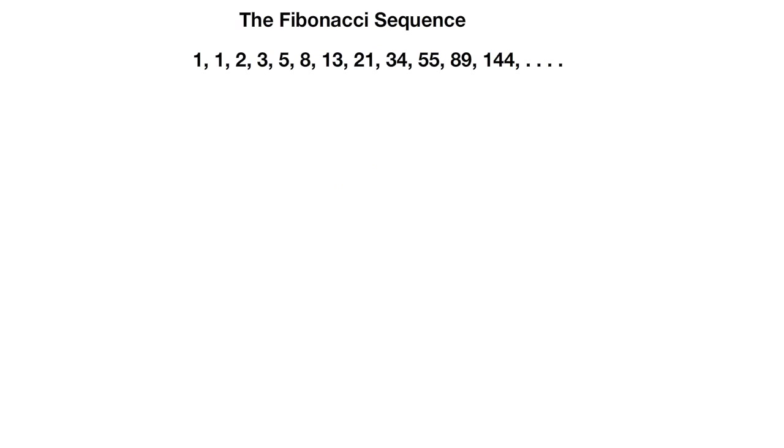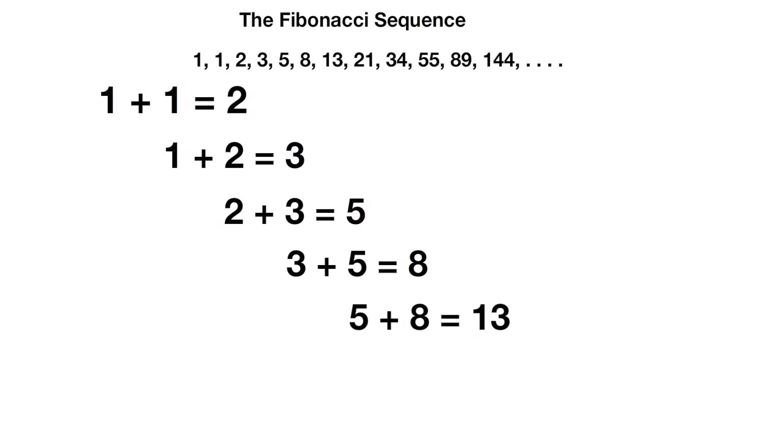This sequence is continually made from adding the previous number to the current. 1 and 1 is 2. 2 and 1 is 3. 3 and 2 is 5. 5 and 3 is 8. You can see how it continues.